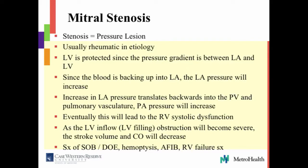Because there is high PA pressure, they sometimes have hemoptysis because they rupture pulmonary vasculature. They develop atrial fibrillation because the left atrium enlarges and becomes electrically unstable. And then they can have right ventricular failure symptoms.